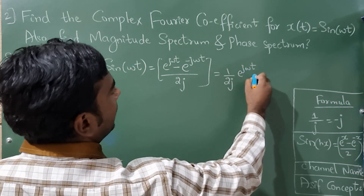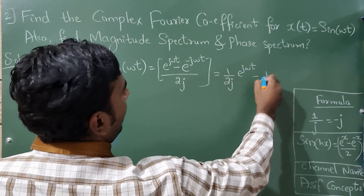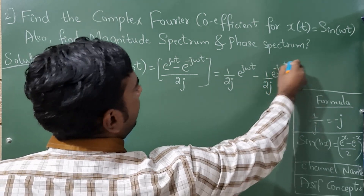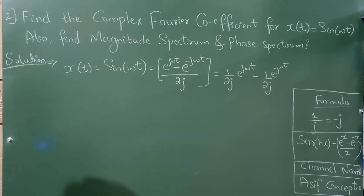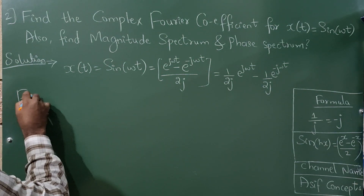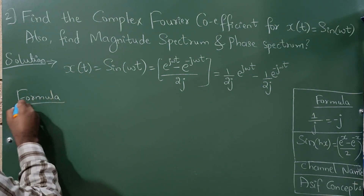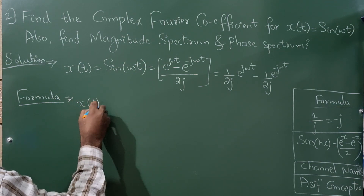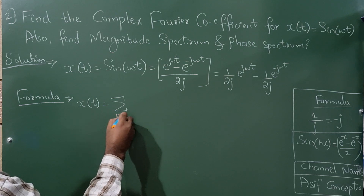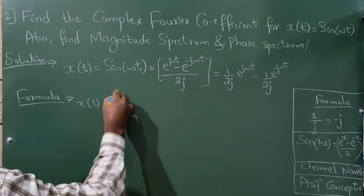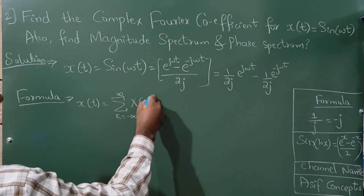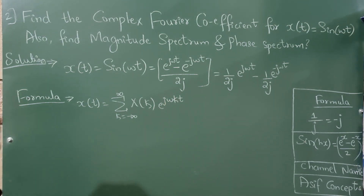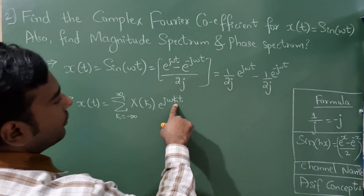Separating the terms: (1/2j) e^(jωt) minus (1/2j) e^(-jωt). Now compare this with the Fourier series formula: x(t) = summation from k = minus infinity to infinity of X(k) e^(jωkt).